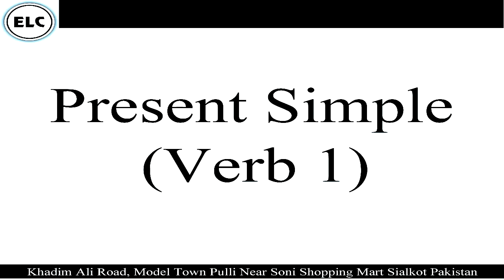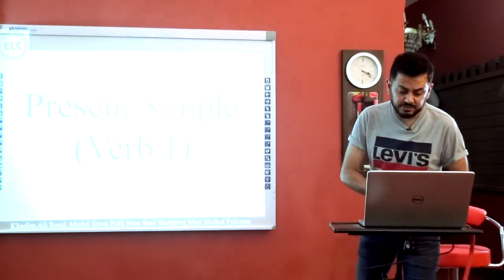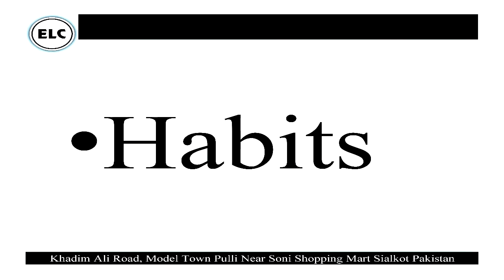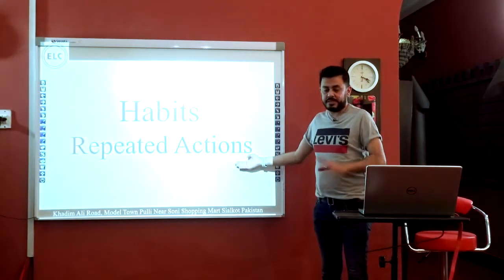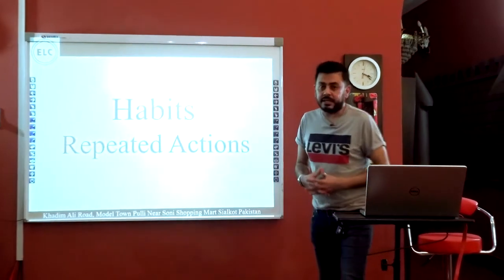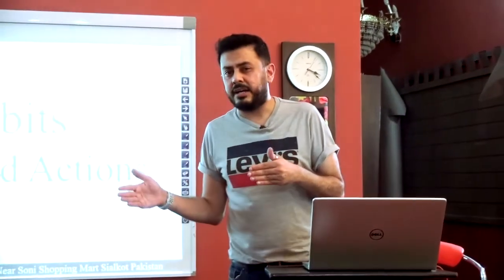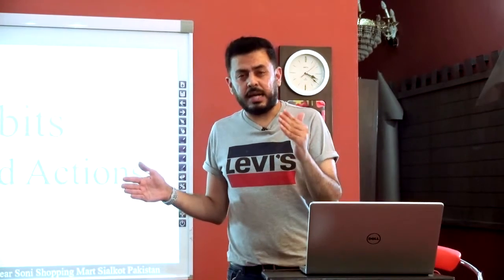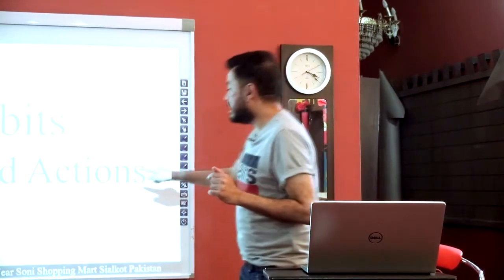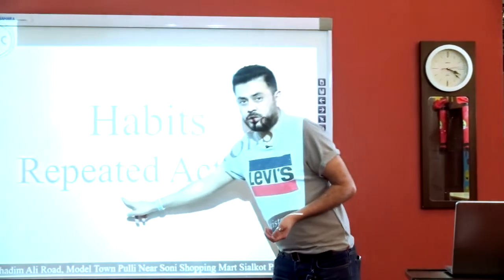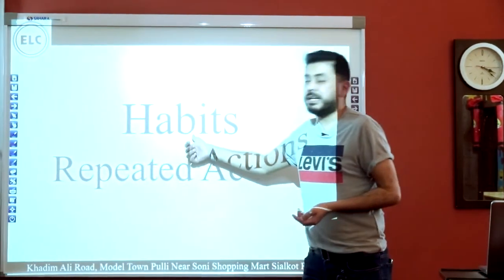Present Simple is all about V1. What is V1 about? V1 is about our habits and our repeated actions. That's it. If you see that it is a repeated action, you use V1. The action has to be repeated — it's our habits.